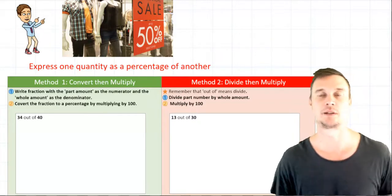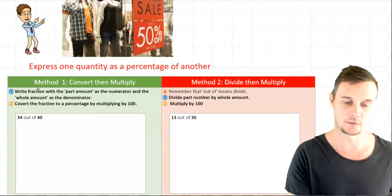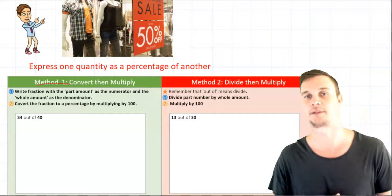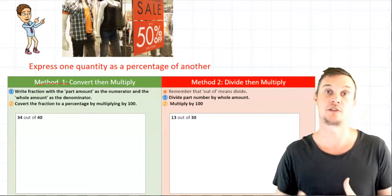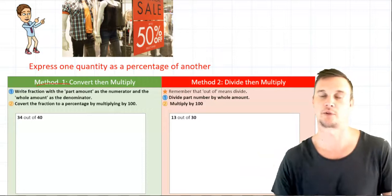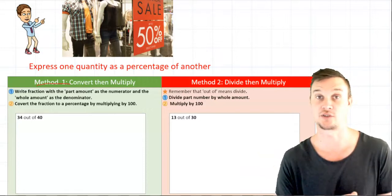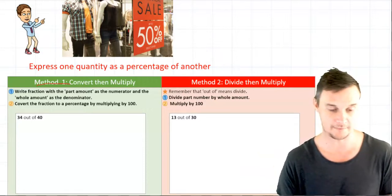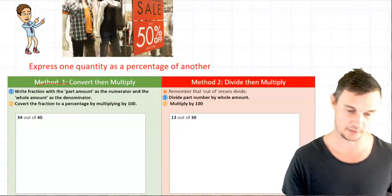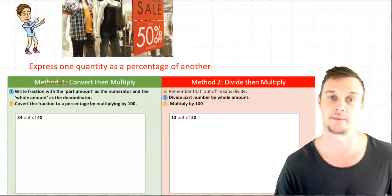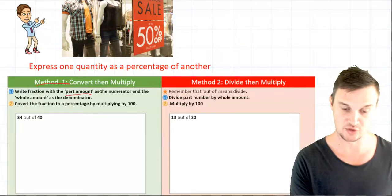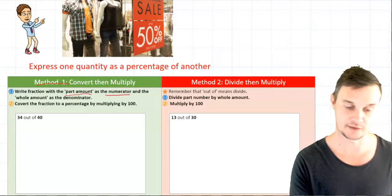And the first one is we convert, method one here, we convert the quantity into a fraction and then we multiply it by 100. So you'll need to know your multiplications of fractions and there's a previous video we've looked at that. But the two steps are the following. So first you're going to write the fraction with the part amount as the numerator and the whole amount as the denominator.